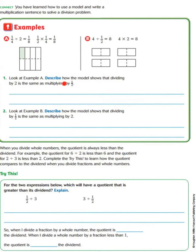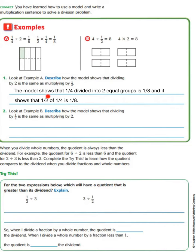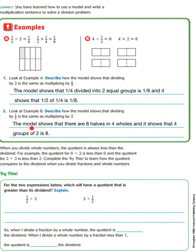Look at example A: describe how the model shows that dividing by 2 is the same as multiplying by 1/2. The model shows that 1/4 divided into 2 equal groups is 1/8, and it shows that 1/2 of 1/4 is 1/8. For example B: describe how the model shows that dividing by 1/2 is the same as multiplying by 2. The model shows that there are 8 halves in 4 wholes, and that 4 groups of 2 is 8.